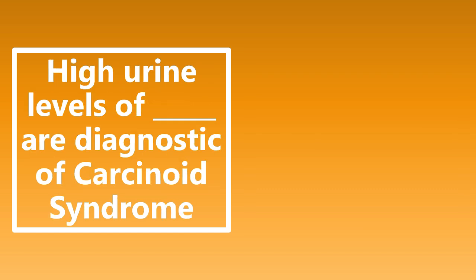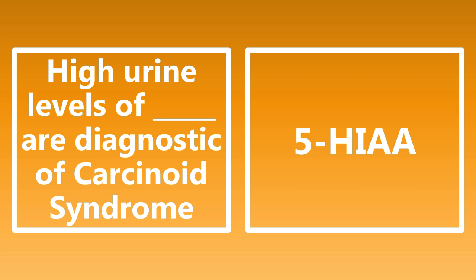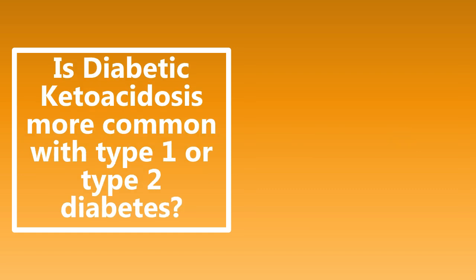High urine levels of what are diagnostic of carcinoid syndrome? This is going to be high urine levels of 5-HIAA. This is a serotonin metabolite, and it is actually the best initial test for the diagnosis of carcinoid syndrome.